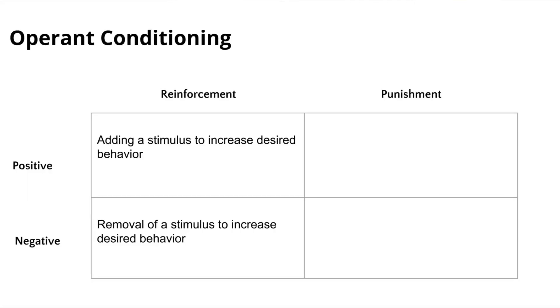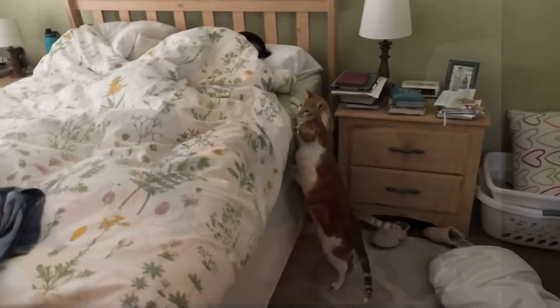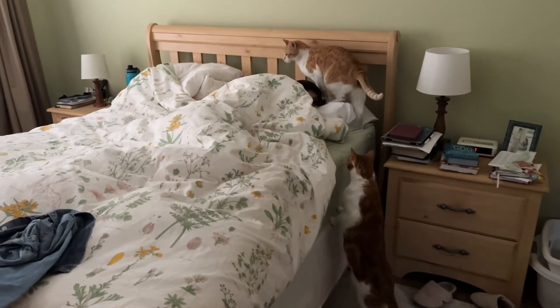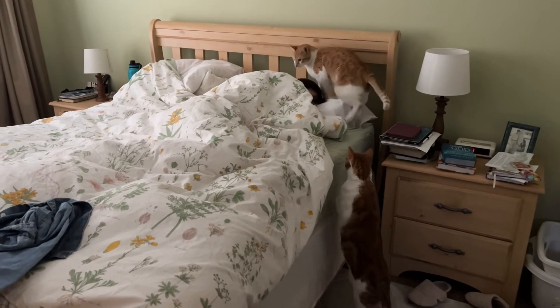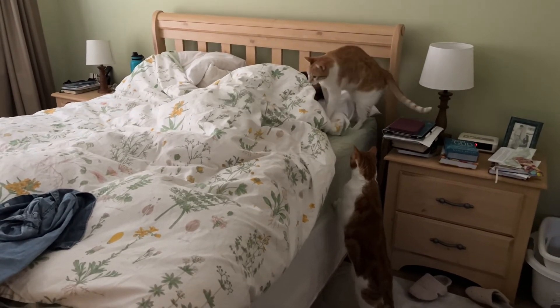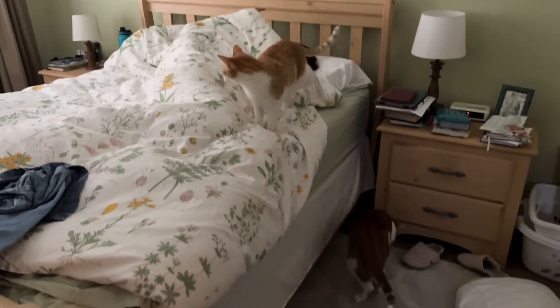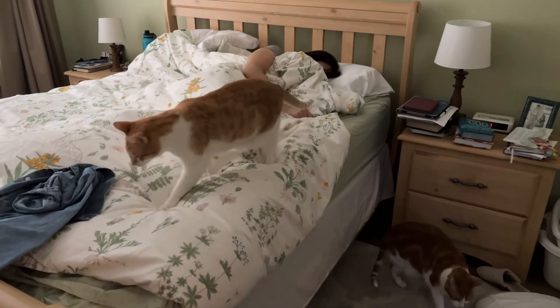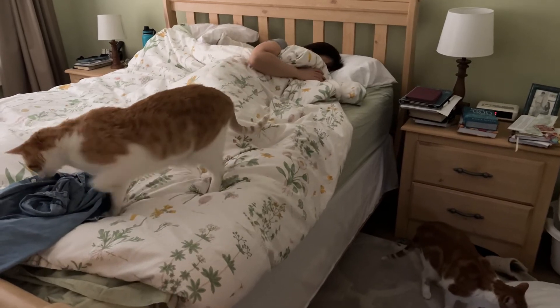Then you have negative reinforcement — this is behavior that leads to the removal of something negative. The best example I could think of is how the cats have honestly trained me. Early in the morning the cats annoy me by laying on my pillow, crawling on me, and just being annoying to try to wake me up. I get up to feed them so that they will stop being so annoying. So I'm being negatively reinforced — my behavior of getting up leads to the removal of them being annoying.